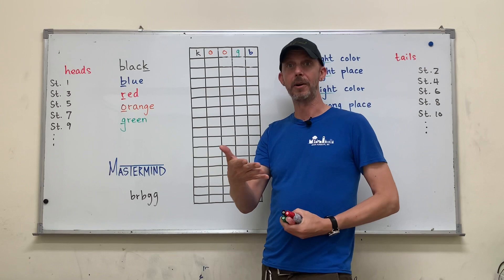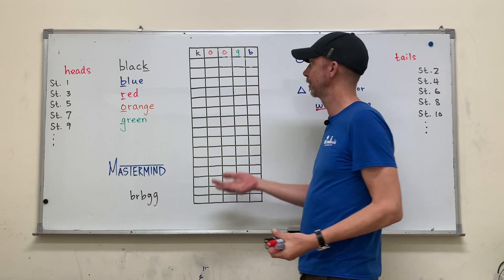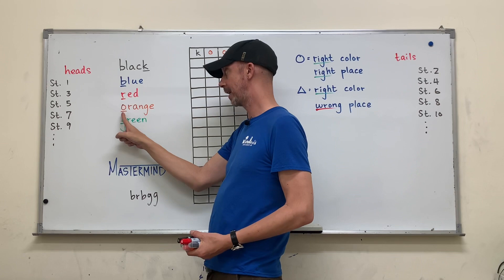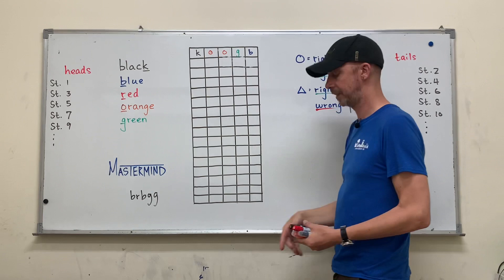Secondly, some people are playing on smaller screens than others. Some people's screen quality is worse than others. Write the letter so it's easy to distinguish. K is black, B is blue, R is red, O is orange, G is green. That way they don't have to distinguish between these two things.